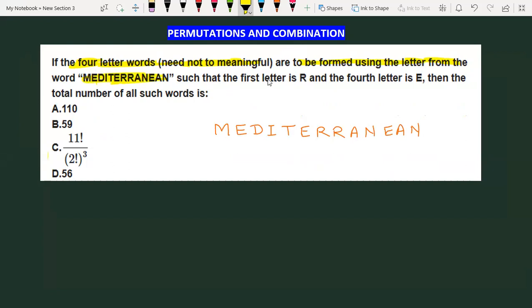The first letter is R. The fourth letter is E. So, how many words will be made? This is our question. Let's start.